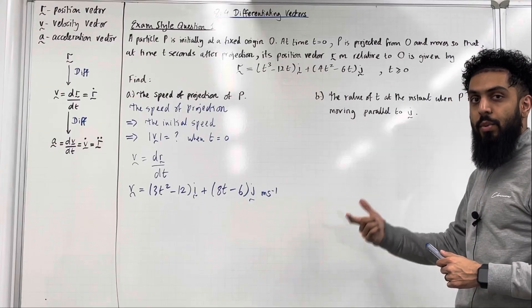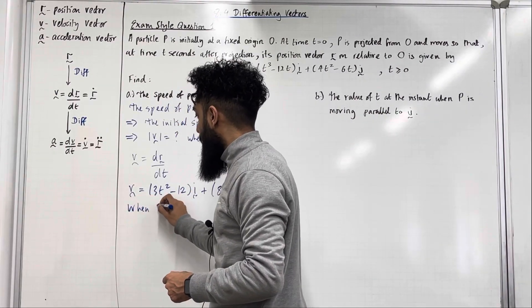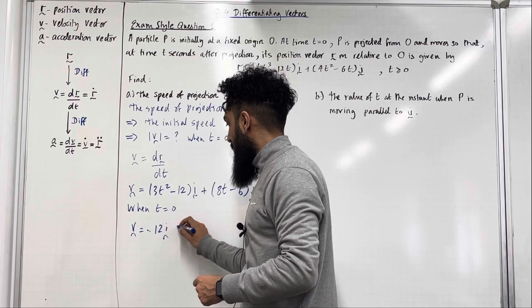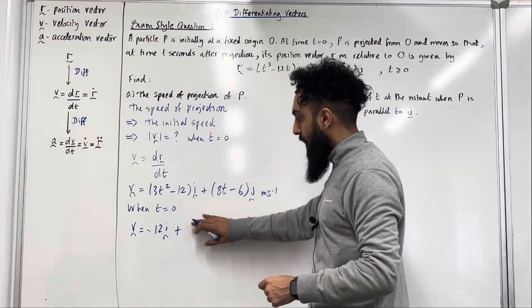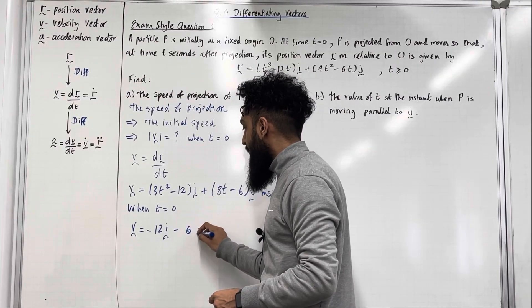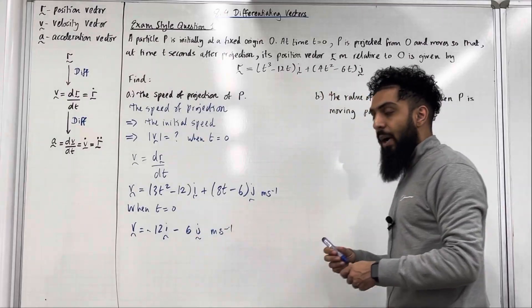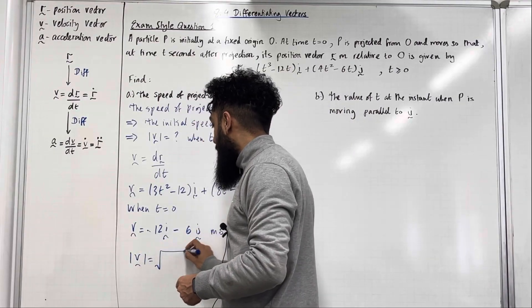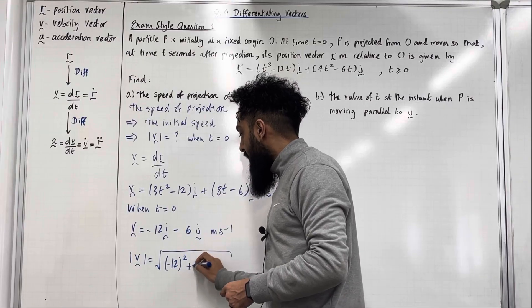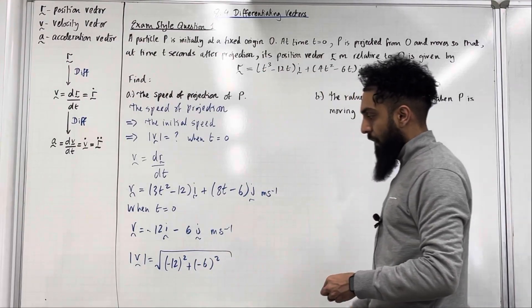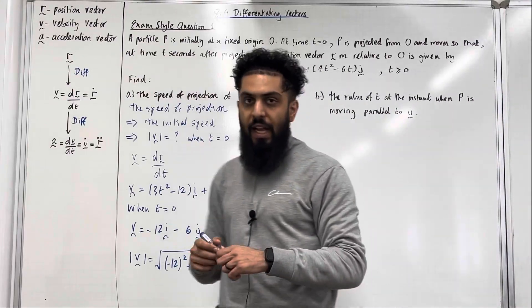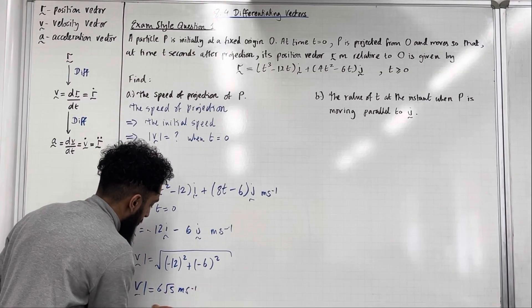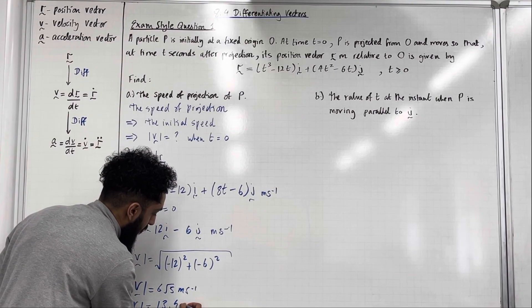Now we substitute t equal to zero. When t equals zero, the velocity vector is equal to minus 12i plus minus 6j, which simplifies to minus 12i minus 6j metres per second. Now we calculate the magnitude: square root of (i component squared plus j component squared). Putting this into the calculator, the magnitude of the velocity vector is 6 root 5 metres per second, which to three significant figures is 13.4 metres per second.